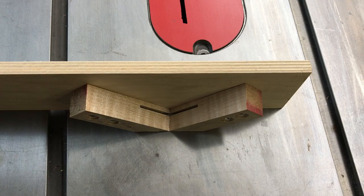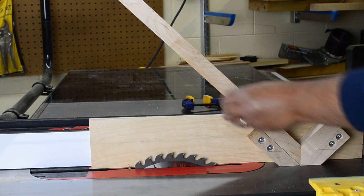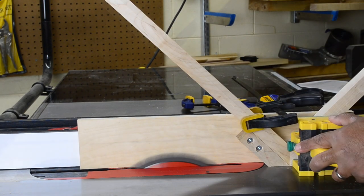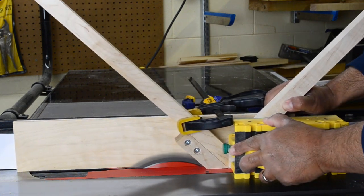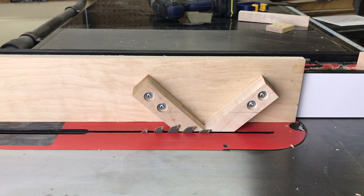With this particular setup I can make matching paired splines by simply flipping the miter from one side to the other, or I could just widen the cut by moving the fence over. And since it's made from scraps, I can rebuild it as many times as I need.